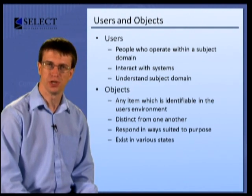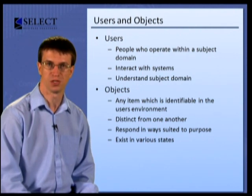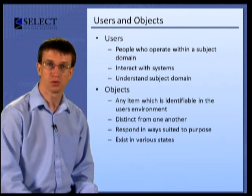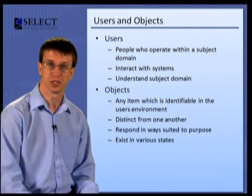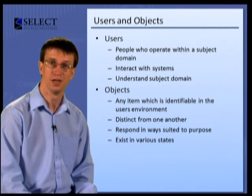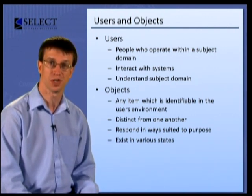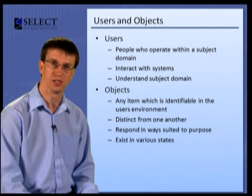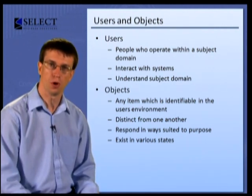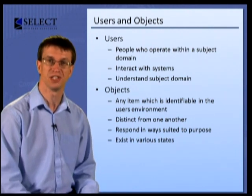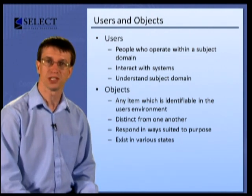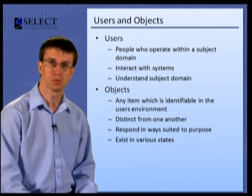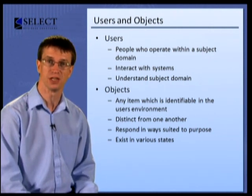When we refer to users, we're referring to people who operate within a subject domain and may interact with systems for that purpose. Users have an understanding of the subject domain based on concepts in the subject area and objects in the environment which they are observing and with which they are interacting. When we refer to objects, we are referring to any item which is identifiable in the environment in which users operate. These objects are distinct from one another and typically respond in ways that are appropriate to their purpose and may exist in various states at different times.